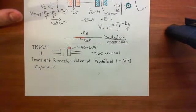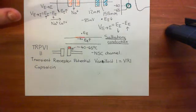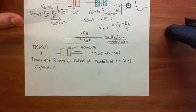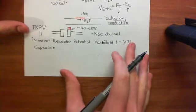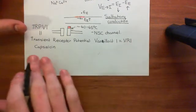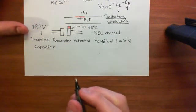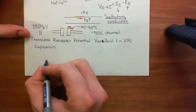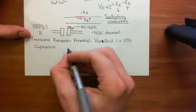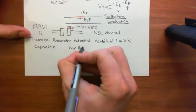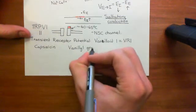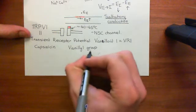The temperature within the mouth hasn't actually gone up — it's just that you're activating the same pathways which are activated by noxious heat. So let's look at the structure of capsaicin to see which group makes it a vanilloid molecule. That group is known as the vanillyl group — we'll identify it by examining the capsaicin molecule.